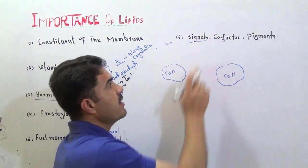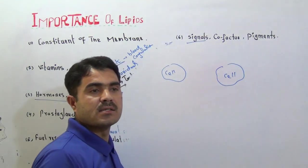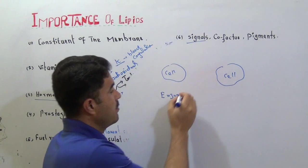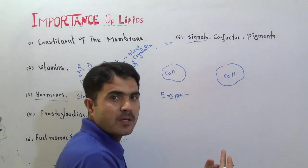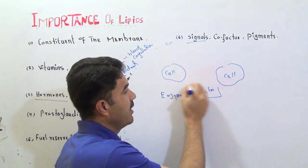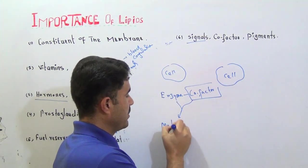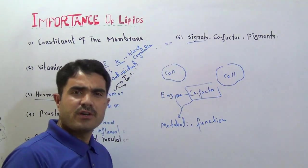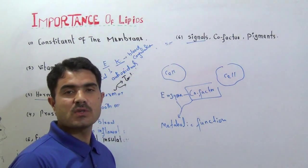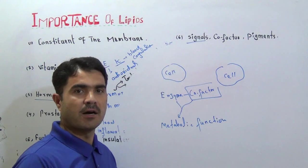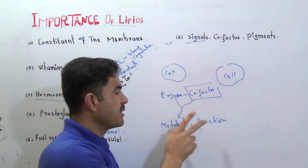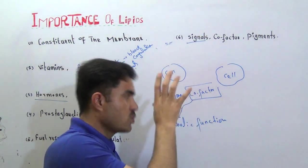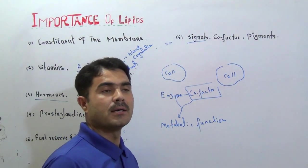Then we have cofactor. A cofactor is a non-protein part of the enzyme. Enzyme is made of protein, but enzyme needs another non-protein part called cofactor. If the cofactor is available with enzyme, then there is a chance of successful metabolic function because enzymes are involved in metabolic functions.